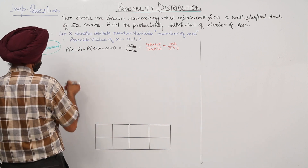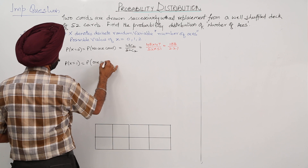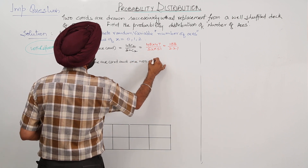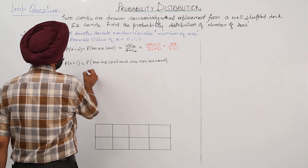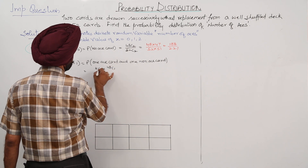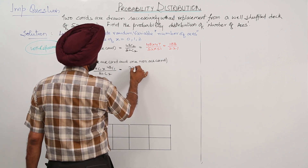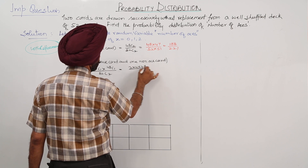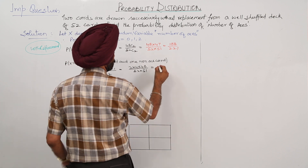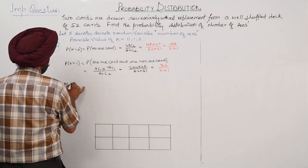Number 2: X = 1, probability for 1 ace card and 1 non-ace card. This is (4C1 × 48C1) / 52C2. Solving: (2 × 4 × 48) / (52 × 51) = 32/221.